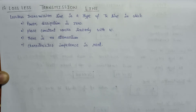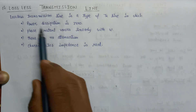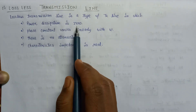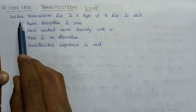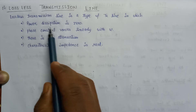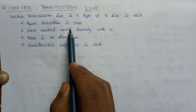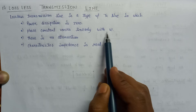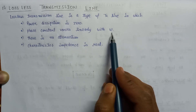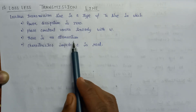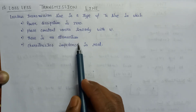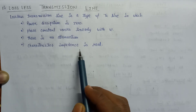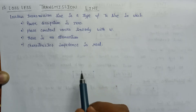Welcome all. In this lecture we are going to learn about lossless transmission line. The lossless transmission line is a type of transmission line in which the power dissipation is zero. Since its name is lossless, there is no loss of power, so the power dissipation is equal to zero. The phase constant varies linearly with the value of omega, there is no attenuation, and the characteristic impedance associated with lossless transmission line is real only.